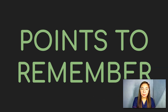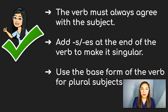Let us now talk about the points to remember in this lesson. First, the verb must always agree with the subject. If we have a singular noun, we must have a singular verb, and if we have a plural noun, we must have a plural verb. Next, add S or ES at the end of the verb to make it singular, and use the base form of the verb for plural subjects.